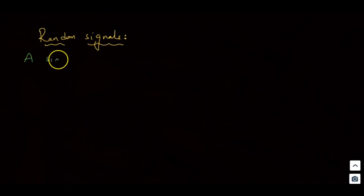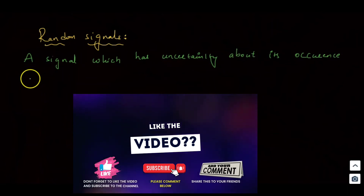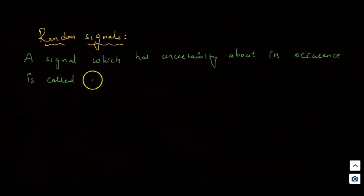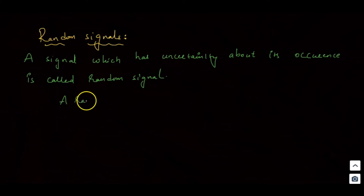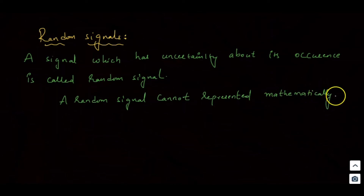On the other hand, random signals: a signal which has uncertainty about its occurrence is called a random signal. A random signal cannot be expressed or represented mathematically.